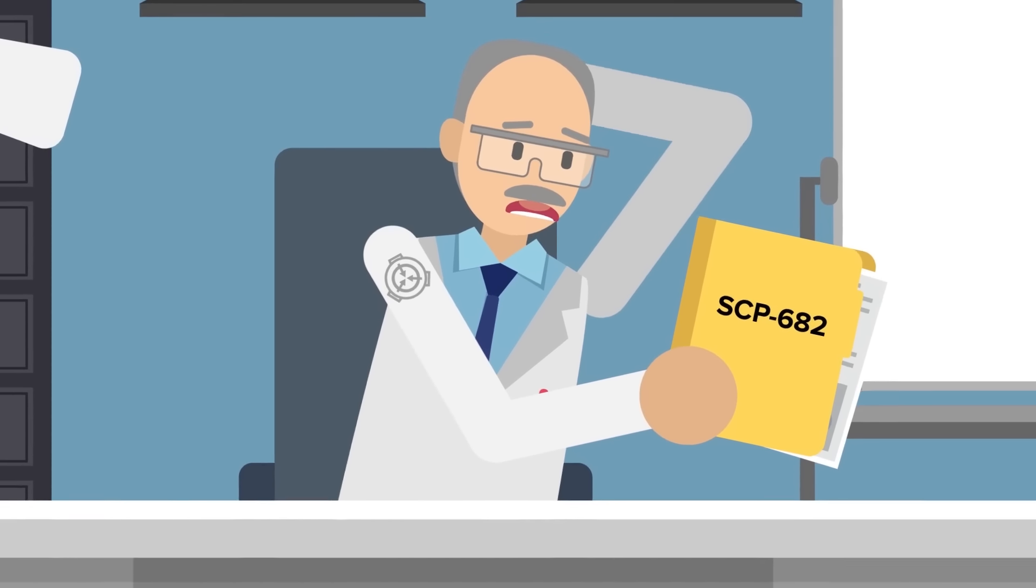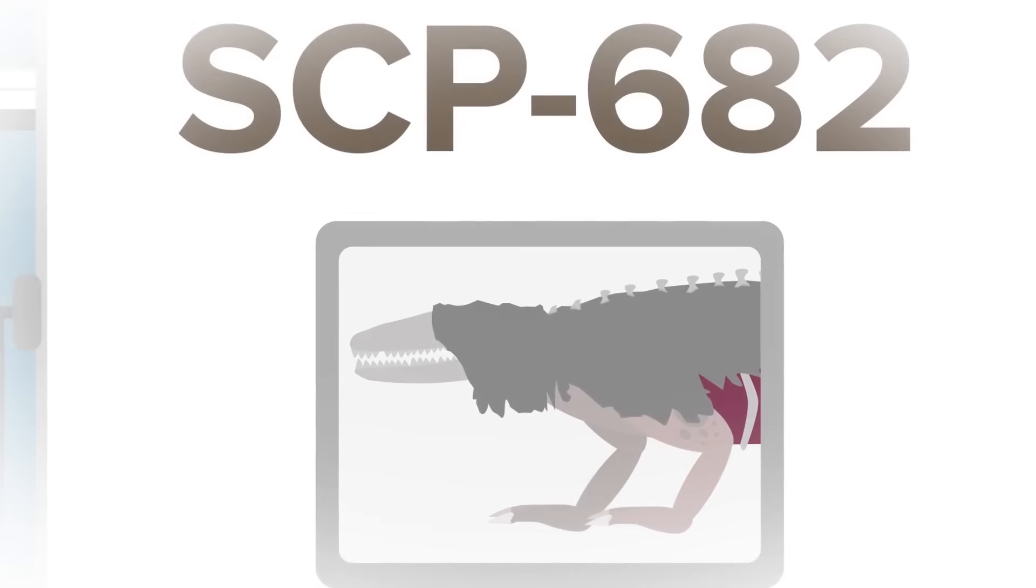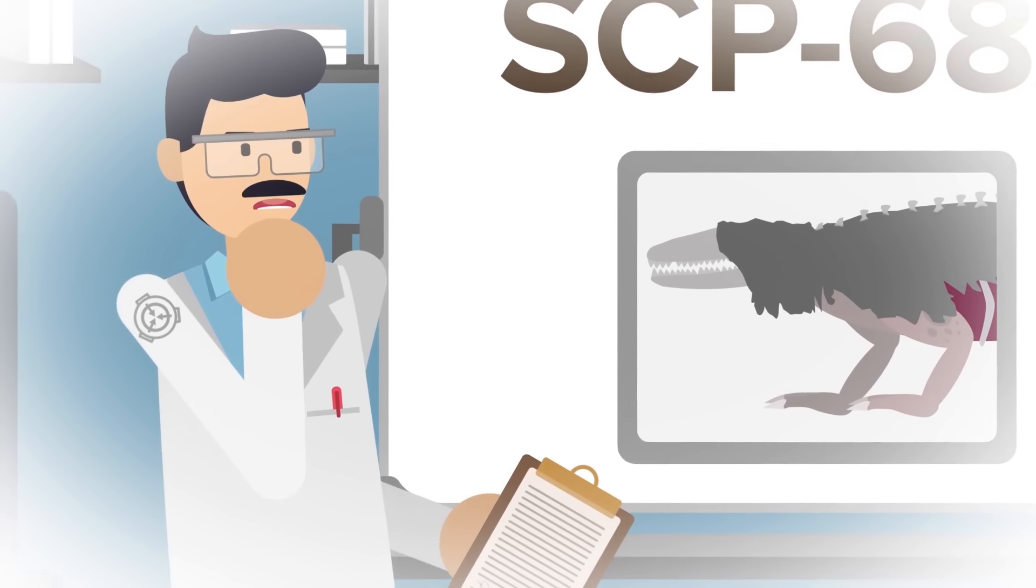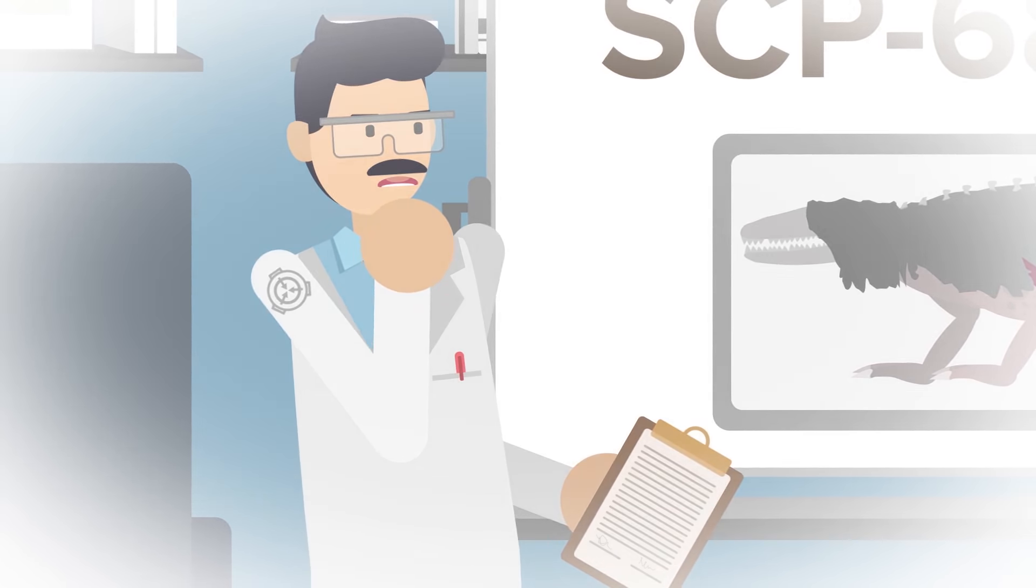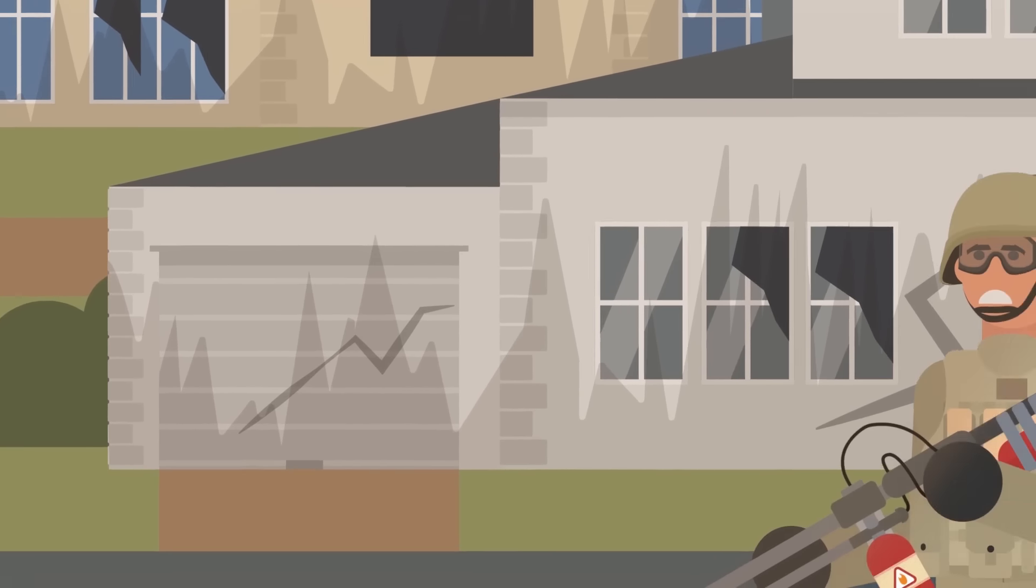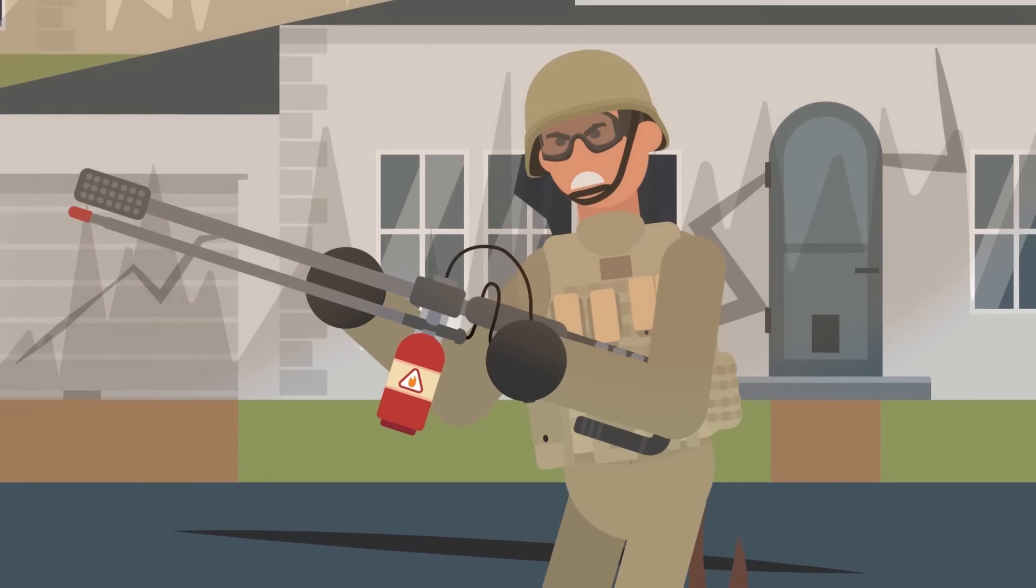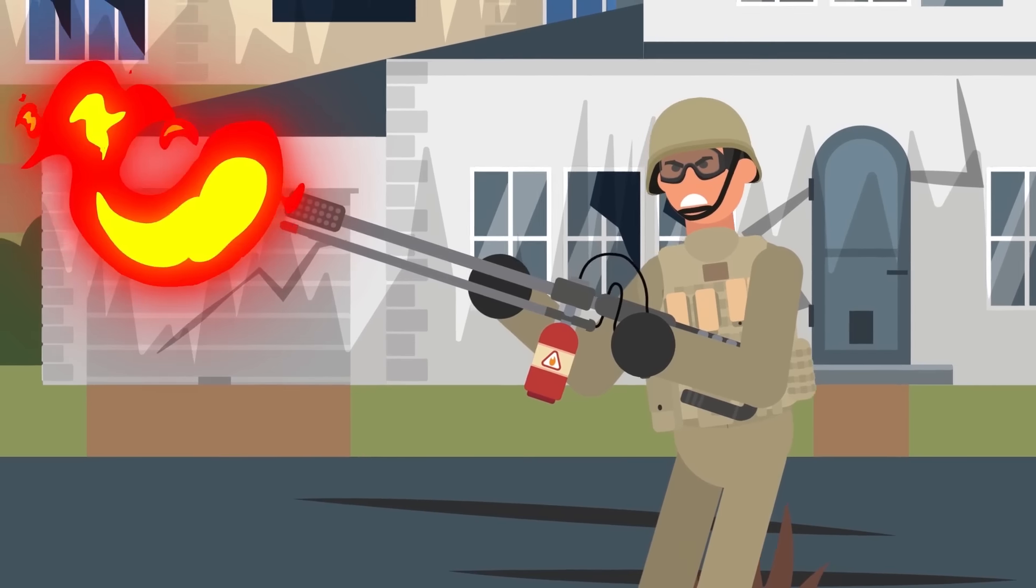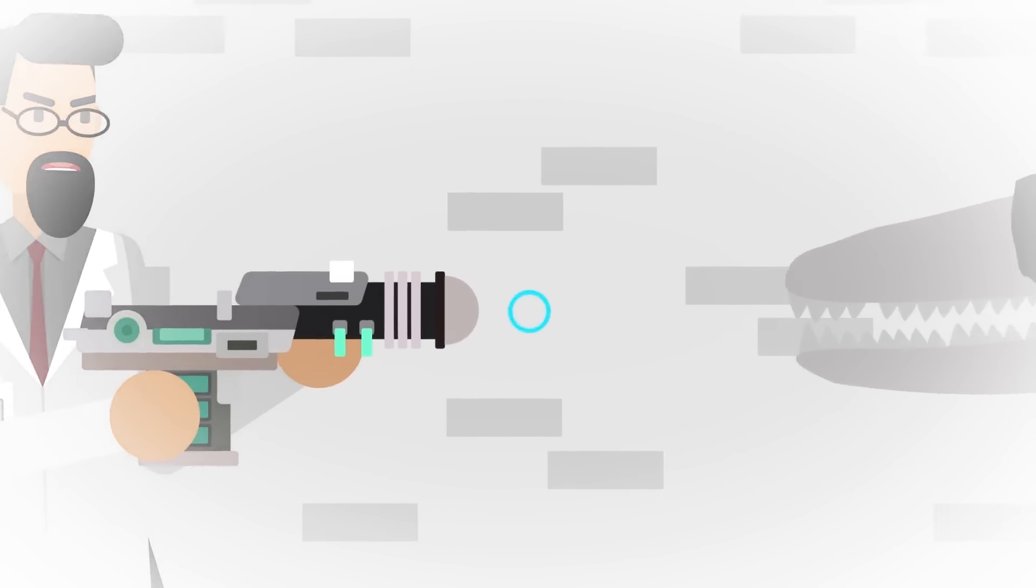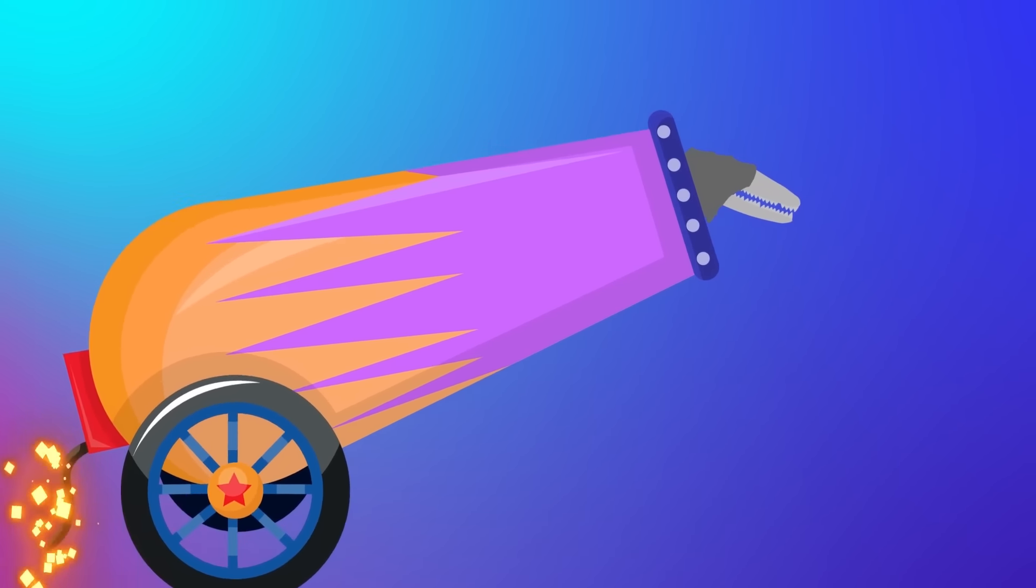It was one of those ideas that was so crazy that it just might work. For as long as anyone at the Foundation could seem to remember, the destruction of SCP-682, fittingly referred to as the hard-to-destroy reptile, had been one of the top priorities of the entire organization. Of all the multifarious methods that the SCP Foundation has tried, the concept of hurling the anomalous beast through the event horizon of a black hole had never been attempted before.